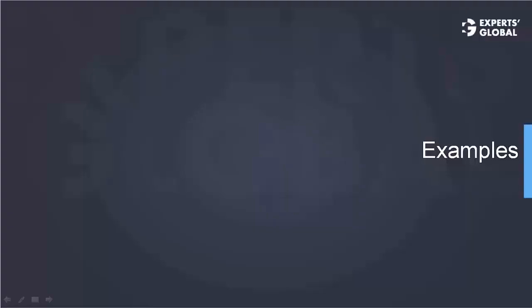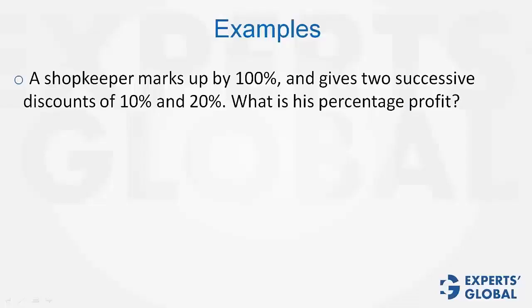Let's move on to some live examples and learn by solving these. A shopkeeper marks up by 100% and gives 2 successive discounts of 10% and 20%. What is his percentage profit?